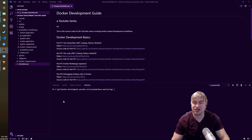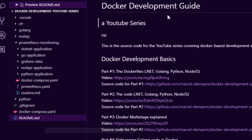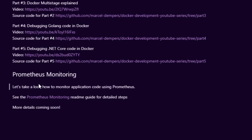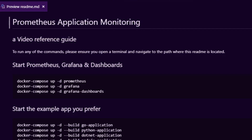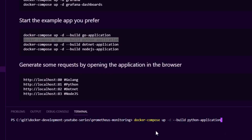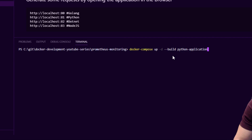So it's Python time. We're going to go to the root of this repository — you'll see there's a README for the Docker Development Guide and all the YouTube videos I've made so far. Go to the Prometheus monitoring section, where I describe everything in this video series around Prometheus: starting Prometheus, Grafana dashboards, etc. We're going to take the Docker Compose for our Python application and paste it into the terminal.